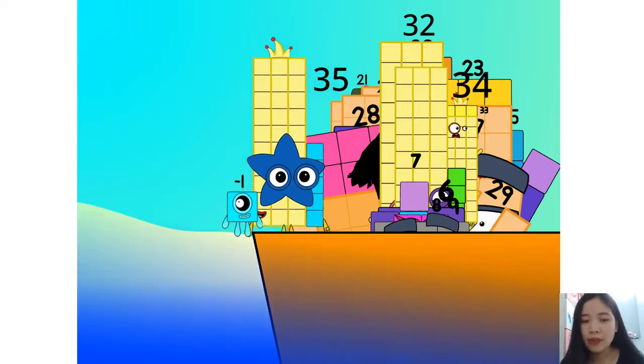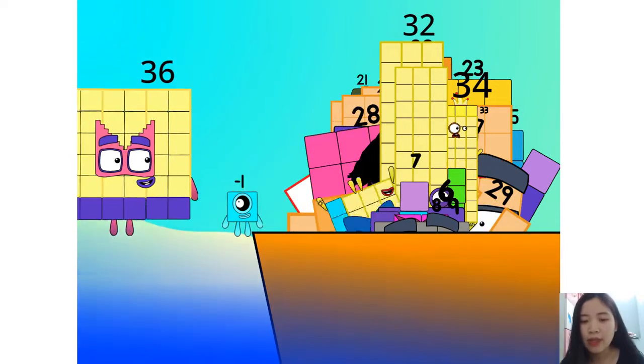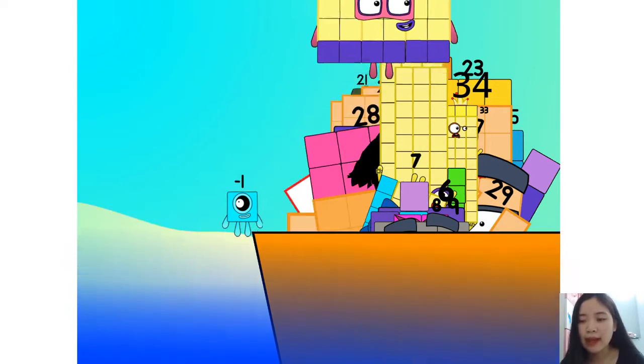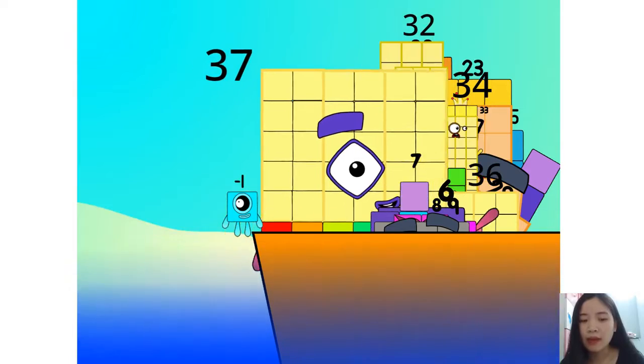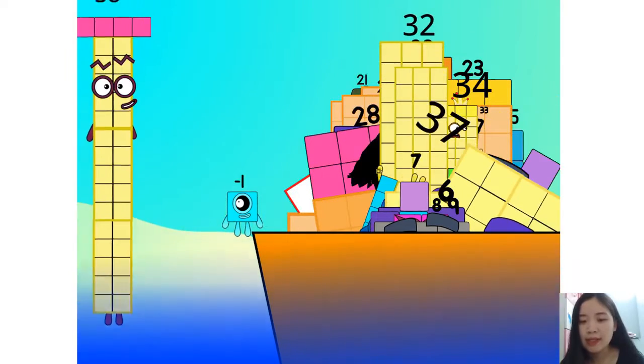One four is four. Two fours, a eight. Three fours, a twelve. We know how to tell it straight. Four fours, a sixteen. Five fours, a twenty.